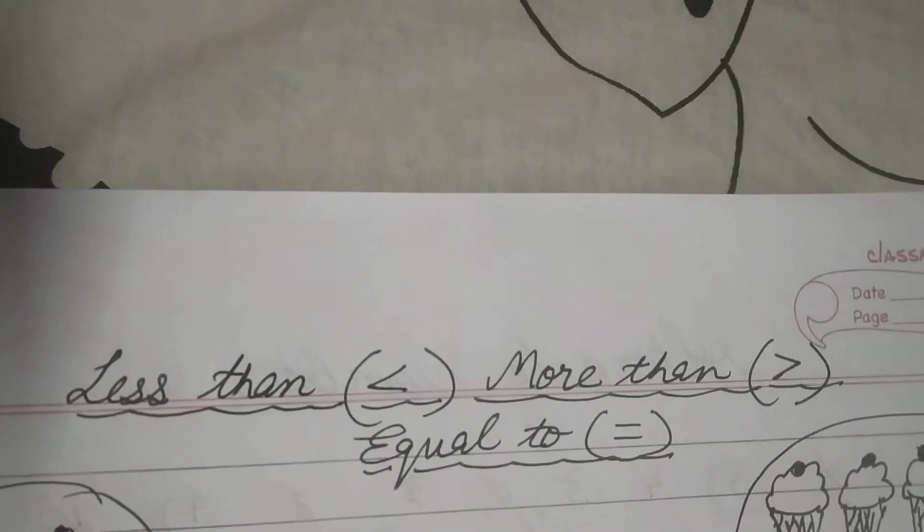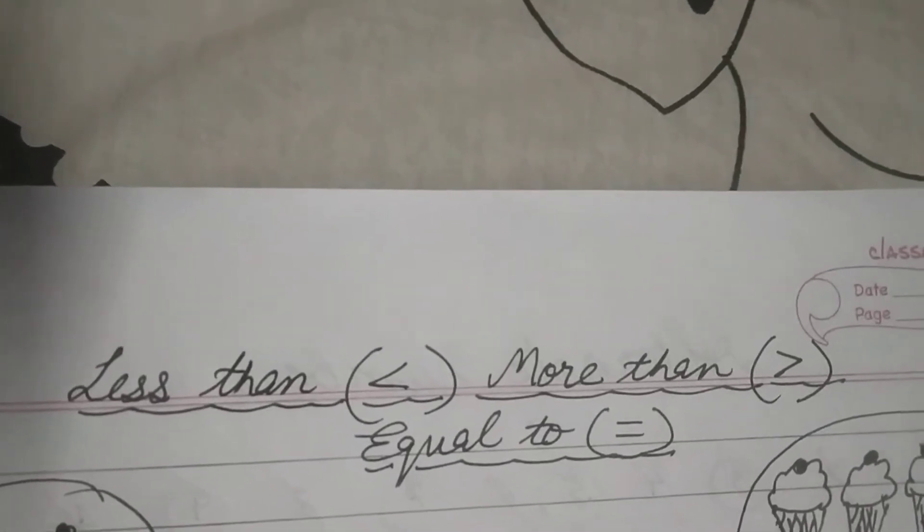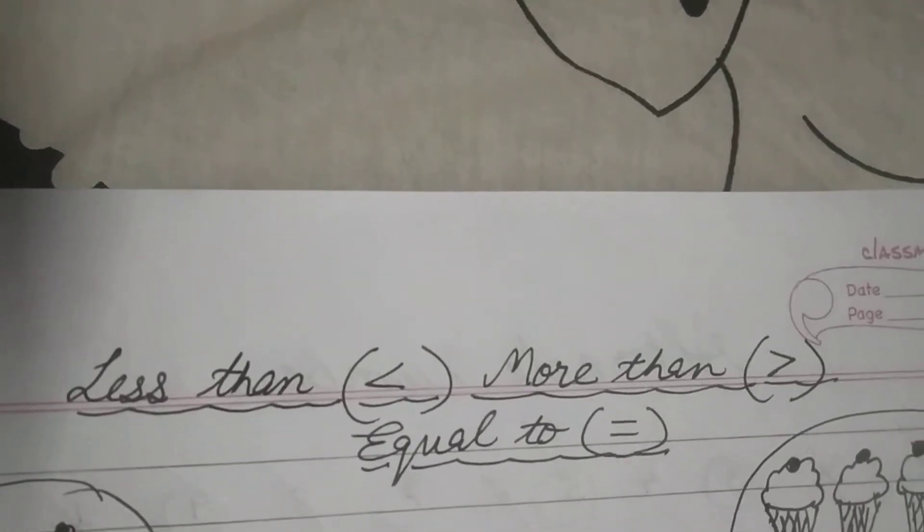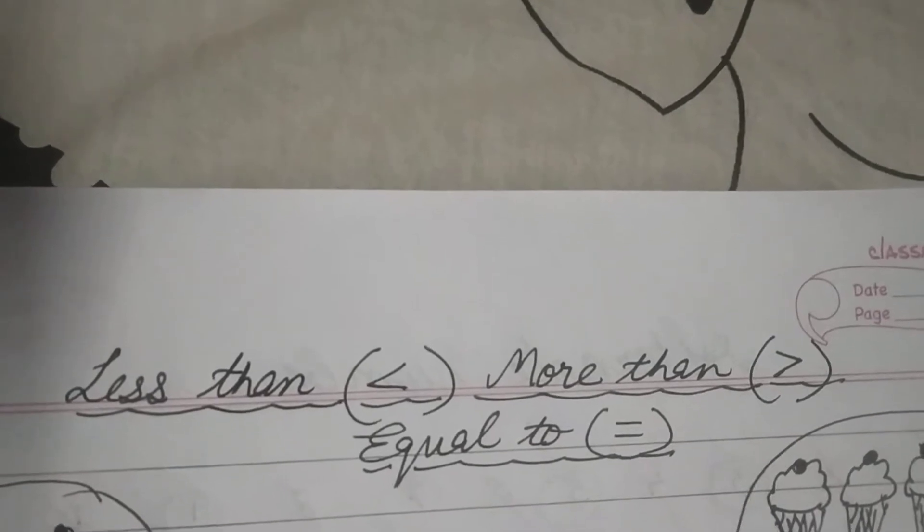Now more than. More than means zyada. Agar pehla number dusare se zyada hai, to hum bolte hai it is more than.